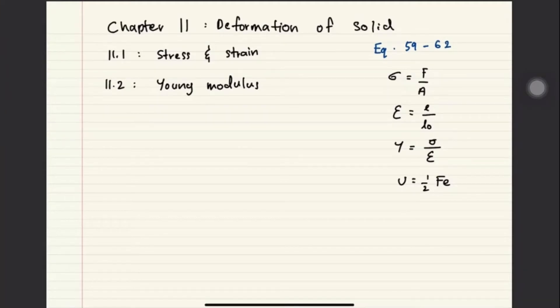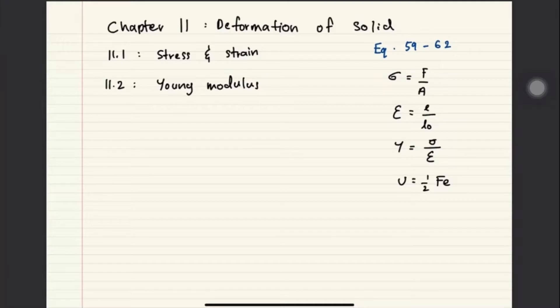For subtopic 11.1, you need to be able to distinguish between stress and strain — you need to know what stress is and what strain is. There is an important graph, which is the graph of stress against strain, and we will discuss elastic and plastic deformation with the force-elongation graph. Stress is basically a ratio of force per unit area.